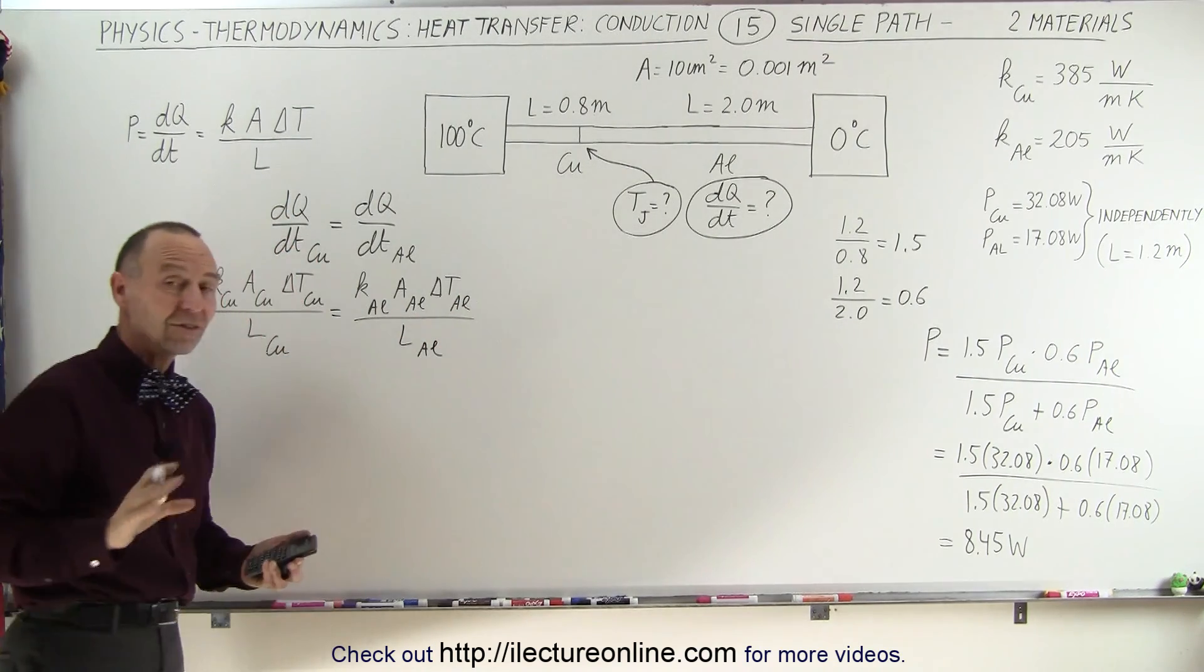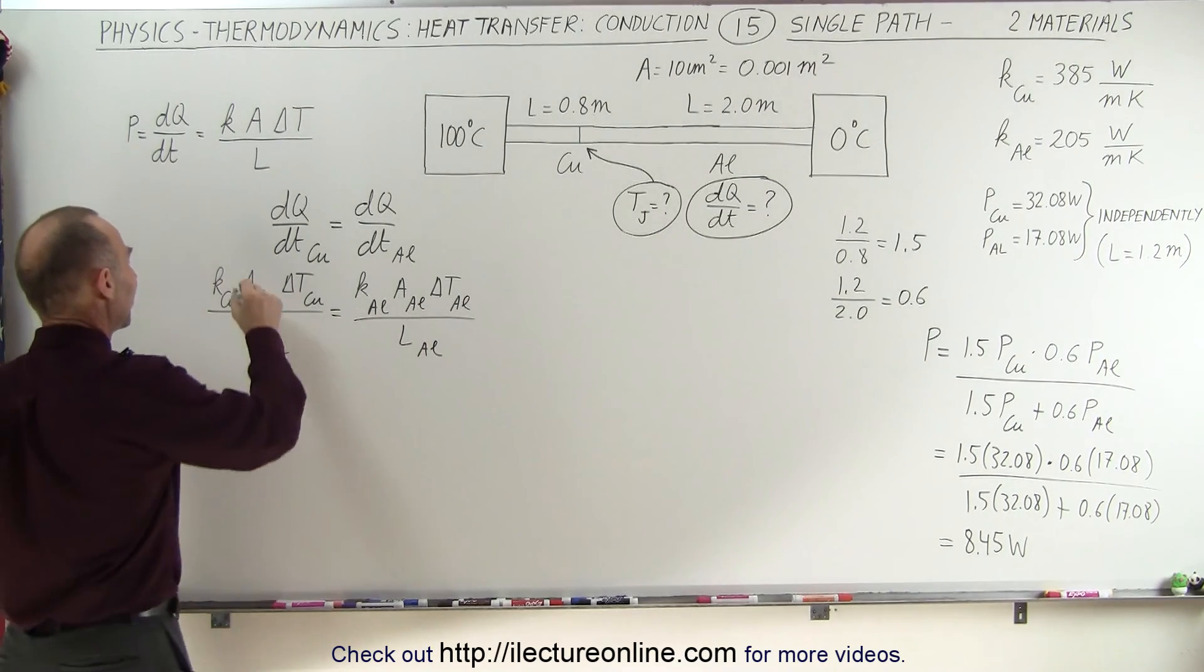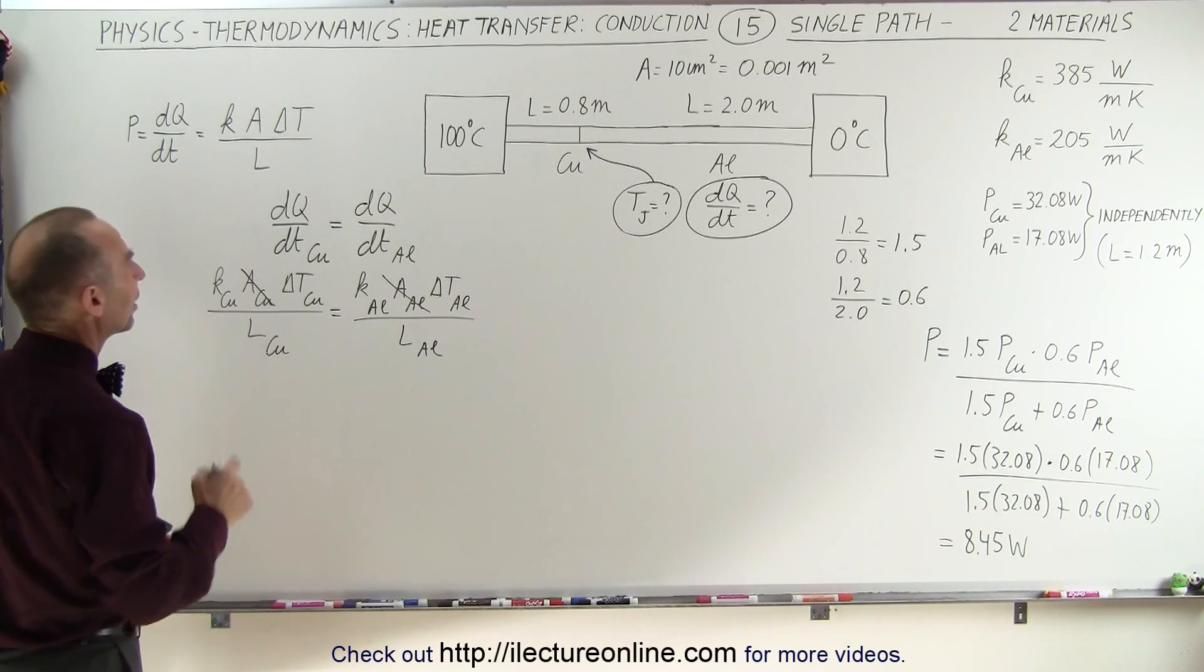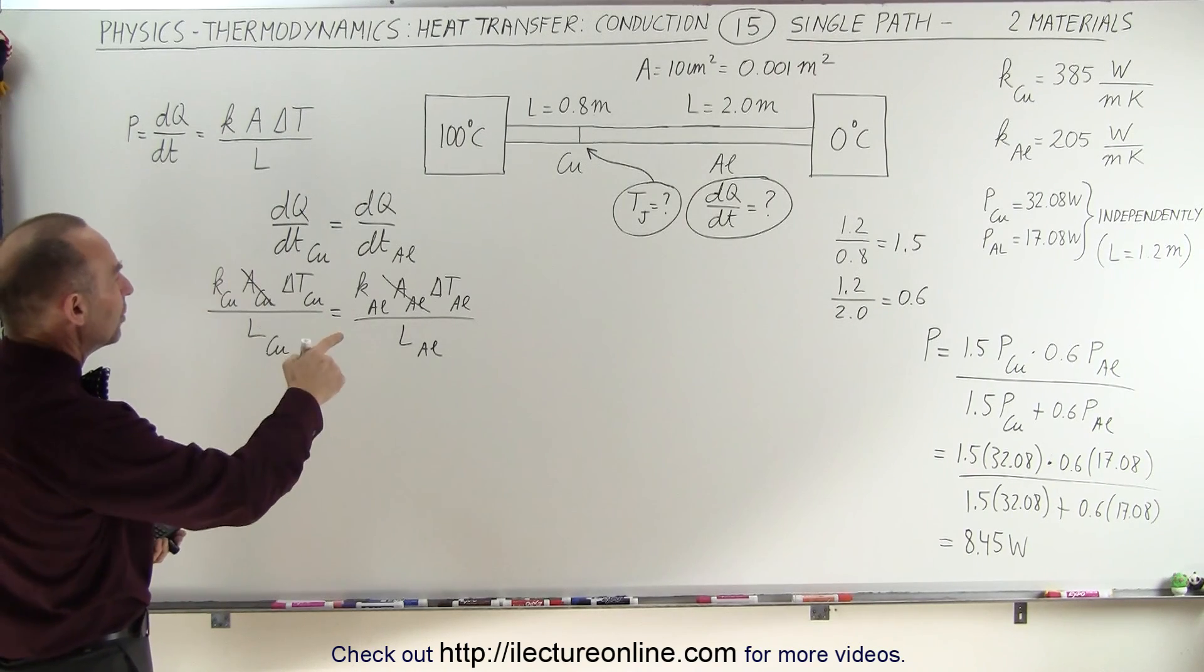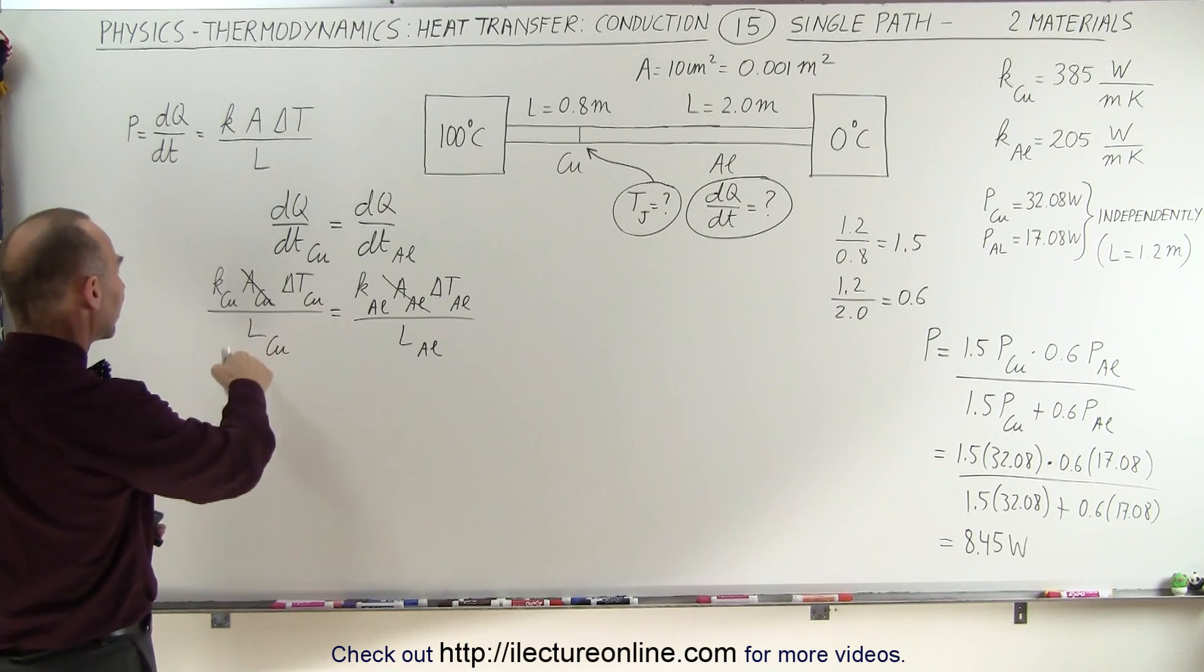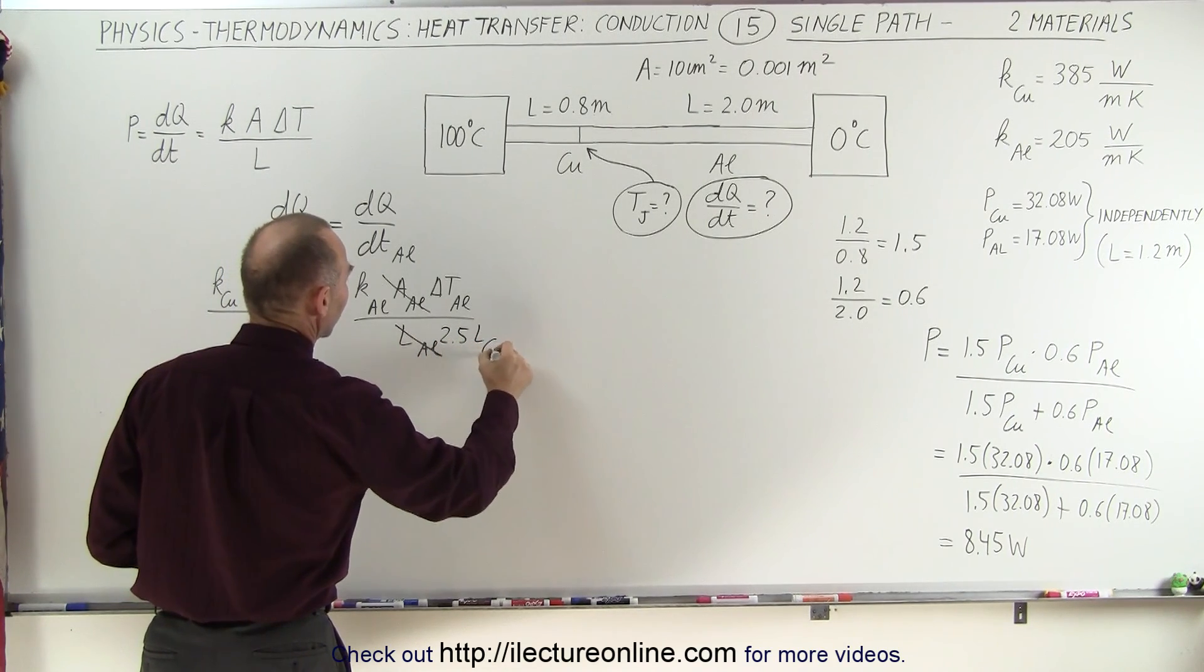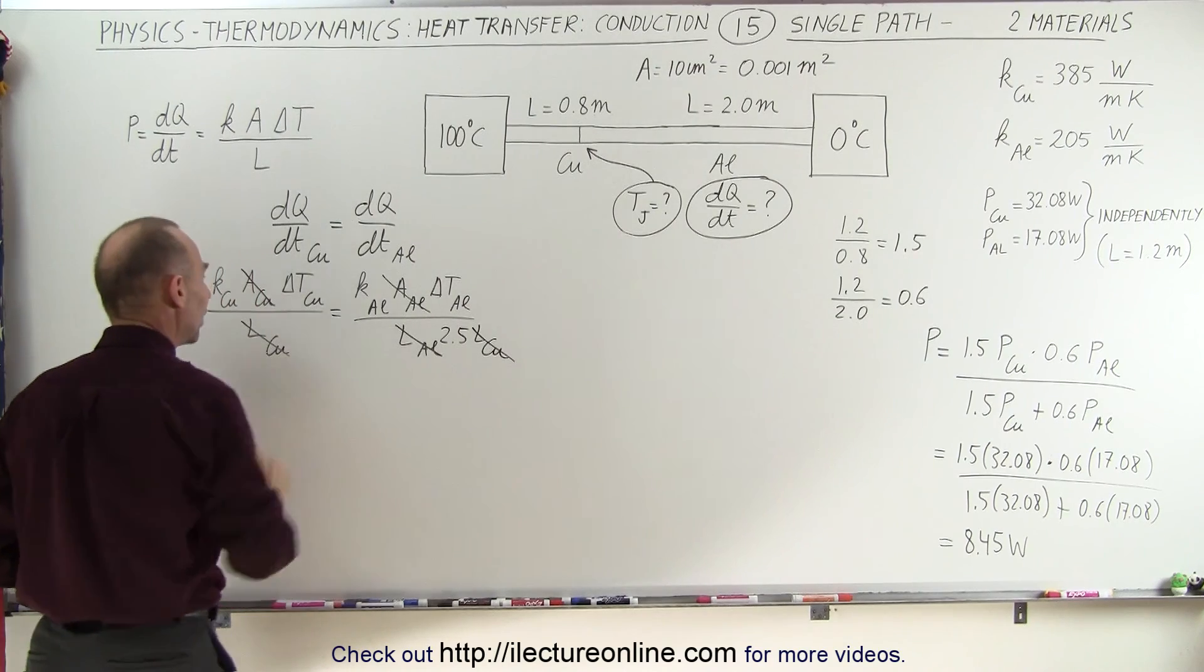And the one thing that's the same, that's been constant throughout, is that the cross-section area is the same for both sections, so that cancels out. And the length of the aluminum is 2.5 times the length of the copper, so we can replace this by 2.5 times the length of the copper. And then these two cancel out as well.